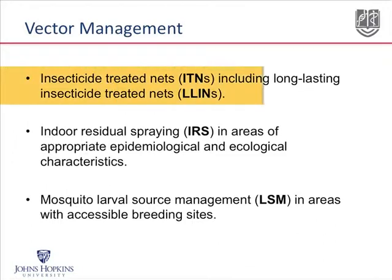The first and probably most common is insecticide-treated bed nets that people sleep under. The long-lasting insecticide-treated nets are impregnated with an insecticide that's actually put inside the fabric during manufacture at the factories.